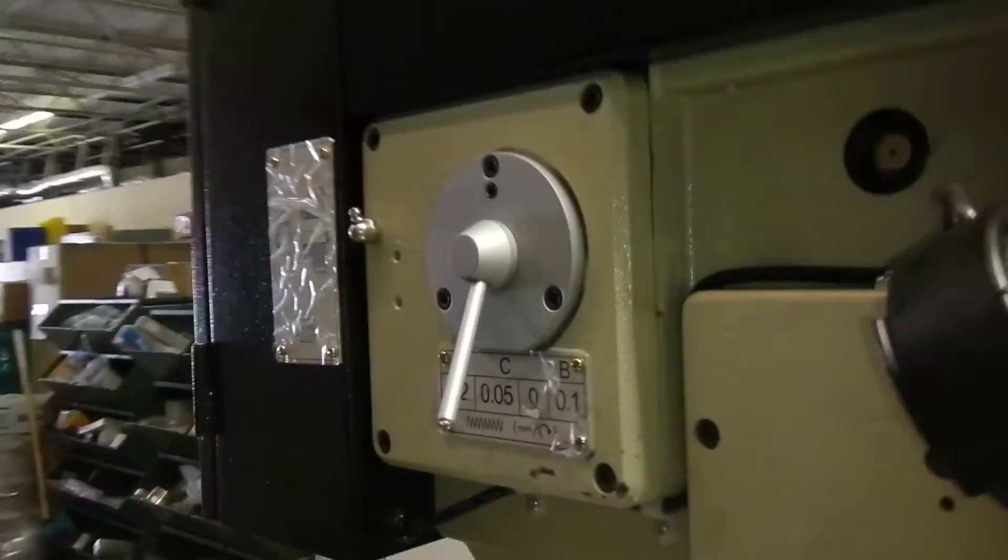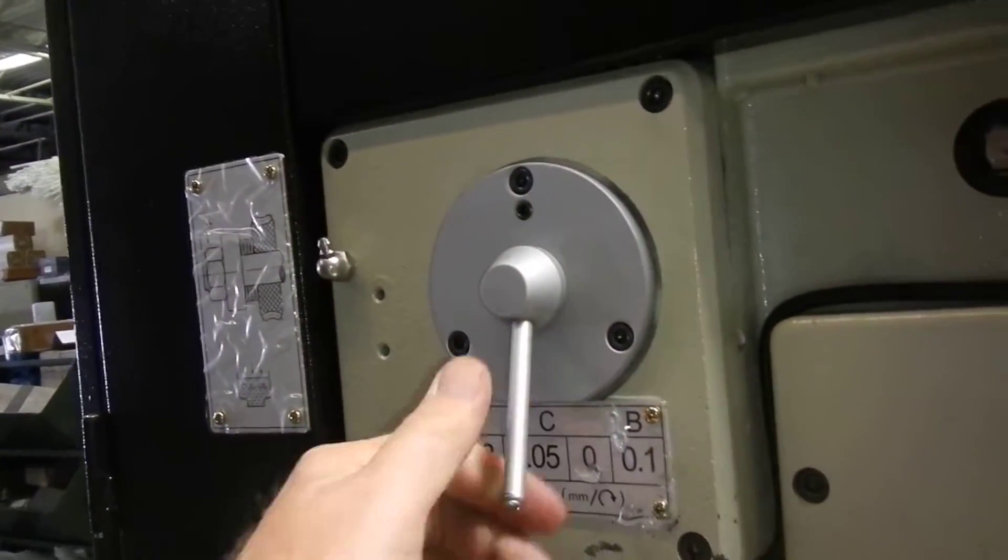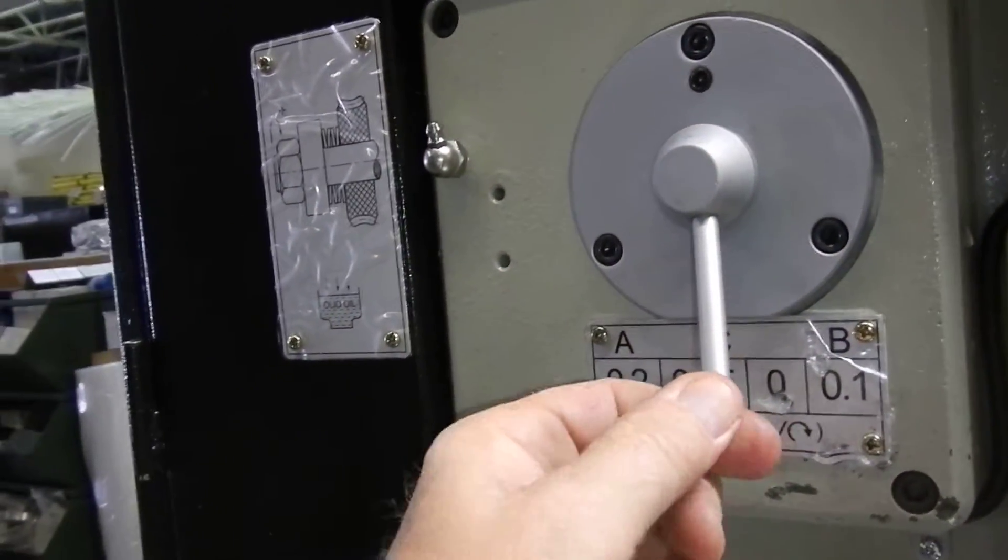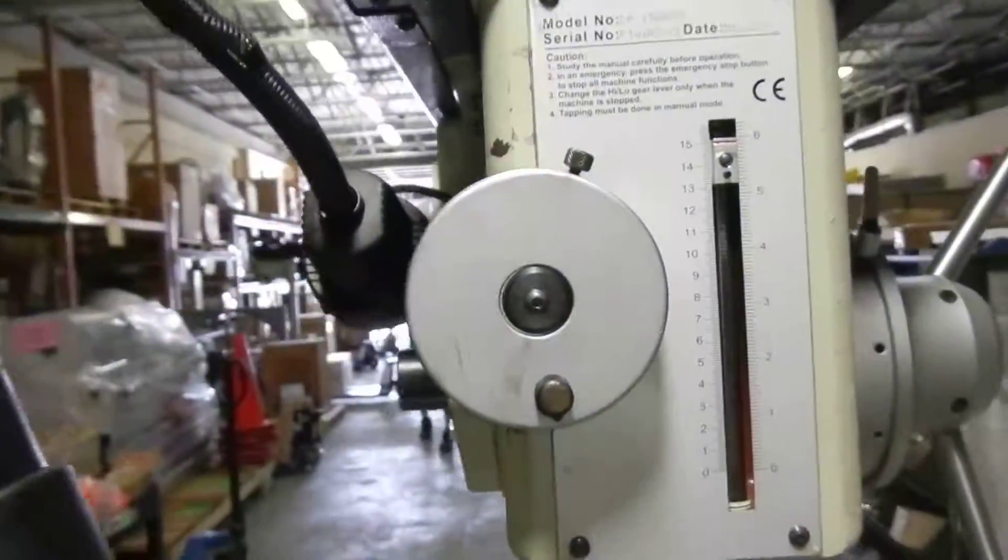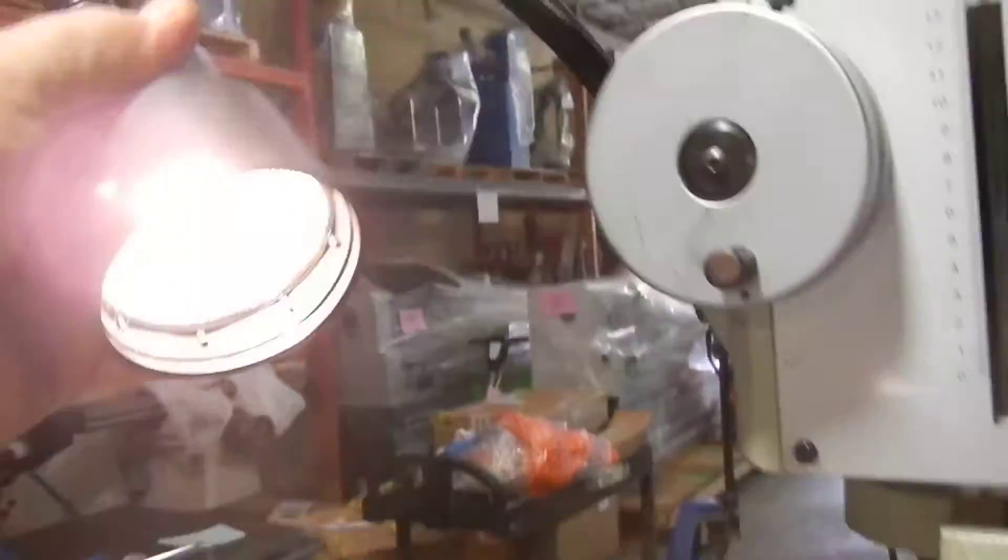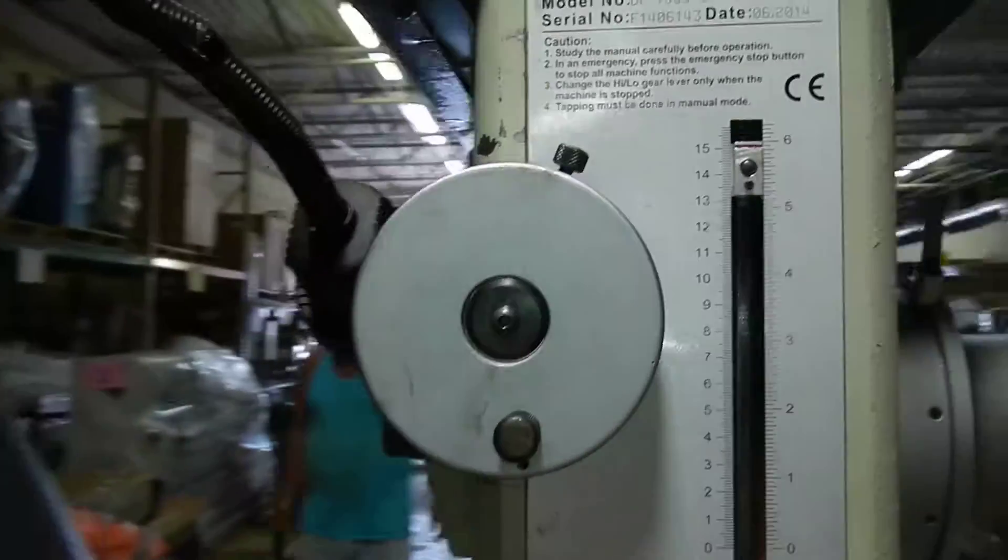It does have a three-speed automatic down speed. When you're tapping, you put it in a zero position right here. There's a work light. The work light operates fine.